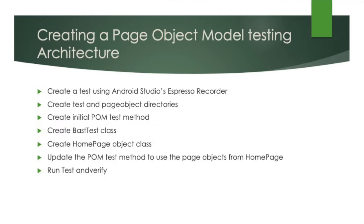We'll create a test using Android Studio's Espresso recorder. Then we will create the test and page object directories. Next we will create an initial POM test method followed by creating a base test class. Then we will create a home page object class, and finally update the POM test method to use the page objects from the home page class.